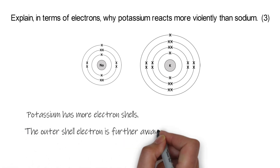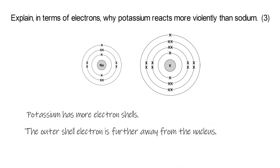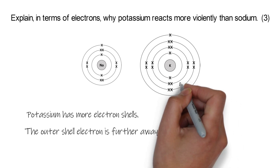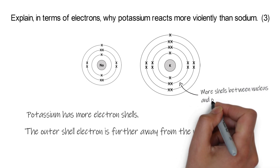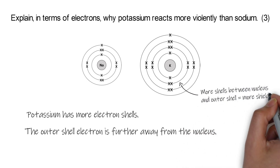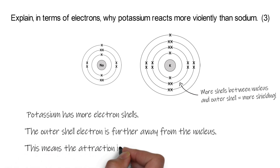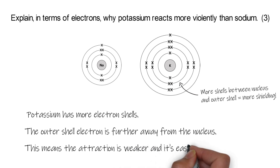On potassium, the outer shell is further away from the positive nucleus, so the electron it's trying to lose is further away from that positive nucleus. There are also these extra shells in the middle, in between the nucleus and the outer shell, that kind of interfere with the attraction between them, and we call this shielding. So more electron shells in between them means there's more shielding. The fact that there's more shielding and that the electron is further away means the attraction between the nucleus and the electron is weaker, and that makes it easier to lose that electron. If it's easier to lose the electron, potassium is going to be more reactive.